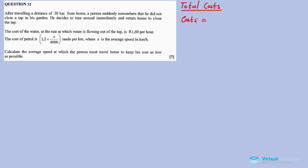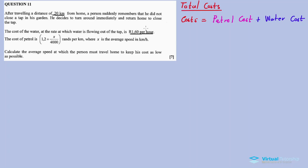The costs involved are the petrol cost plus the water cost. The water cost is 1.60 per hour, and the cost of petrol is expressed as a rate in rents per kilometer. So the petrol cost depends on the number of kilometers, and the water cost depends on time at the rate of 1.60 per hour.